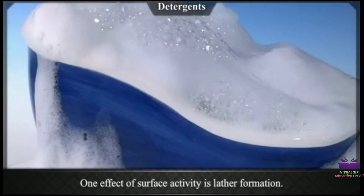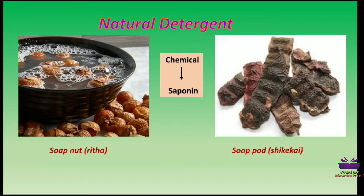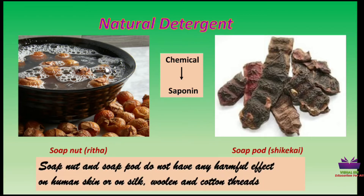Soap nut (reetha) and soap pod (shikakai) are natural detergents which are commonly used. They contain a chemical substance called saponin. Soap nut and soap pod do not have any harmful effect on human skin or on silk, woolen, or cotton threads.